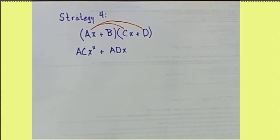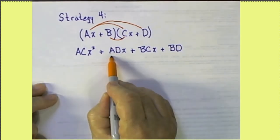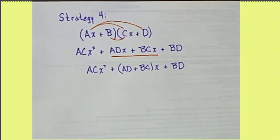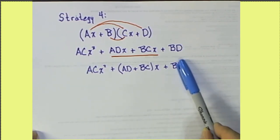Strategy 4 is a generalization of strategy 3 and is particularly important to understand. Let's consider what happens when we multiply two general linear expressions together. AX times CX is going to be ACX squared plus ADX plus BCX plus BD. You'll notice there's some like terms here that we can combine. Now notice something interesting here. The A, C, B, and D are all factors that end up in the leading term and the trailing term.